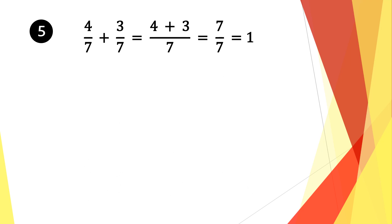Moving on to question 5. We have 4 sevenths plus 3 sevenths, and again we have a common denominator in both of these fractions. So we take a common factor of 7. 7 divided by 7 is 1, and 1 times 4 is 4. We bring along the plus sign, then do the same for the second fraction. 7 divided by 7 is 1, and 1 times 3 is 3. We add the numerators, which gives 7, and bring along the denominator 7. 7 divided by 7 equals 1, so our solution is 1.